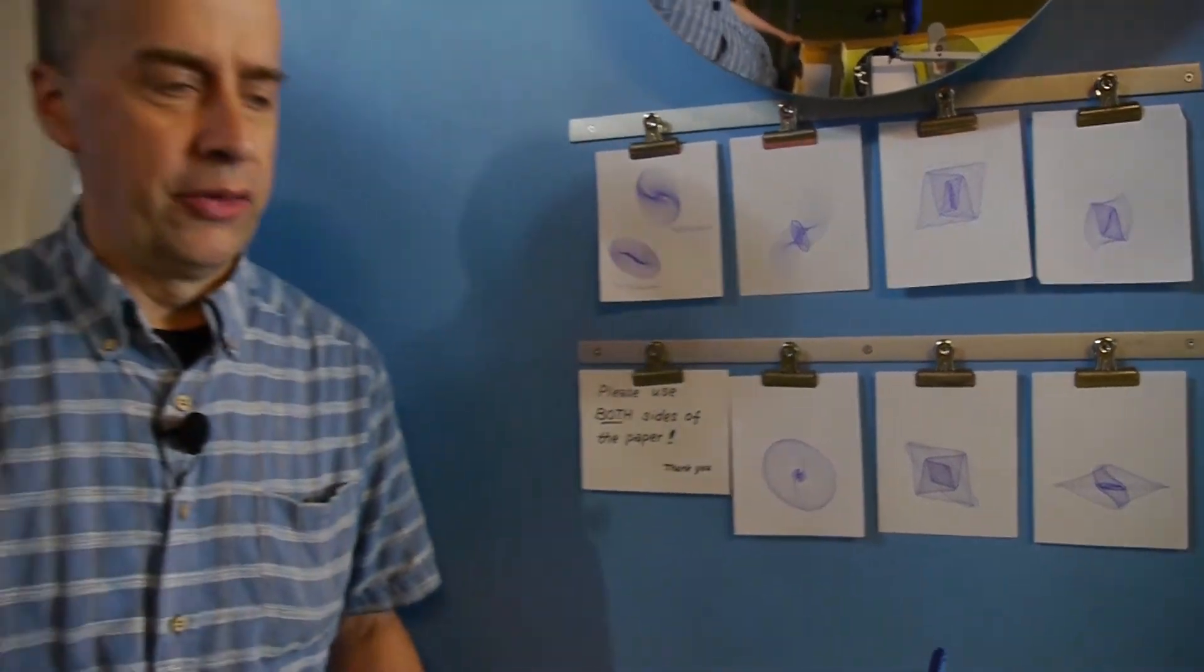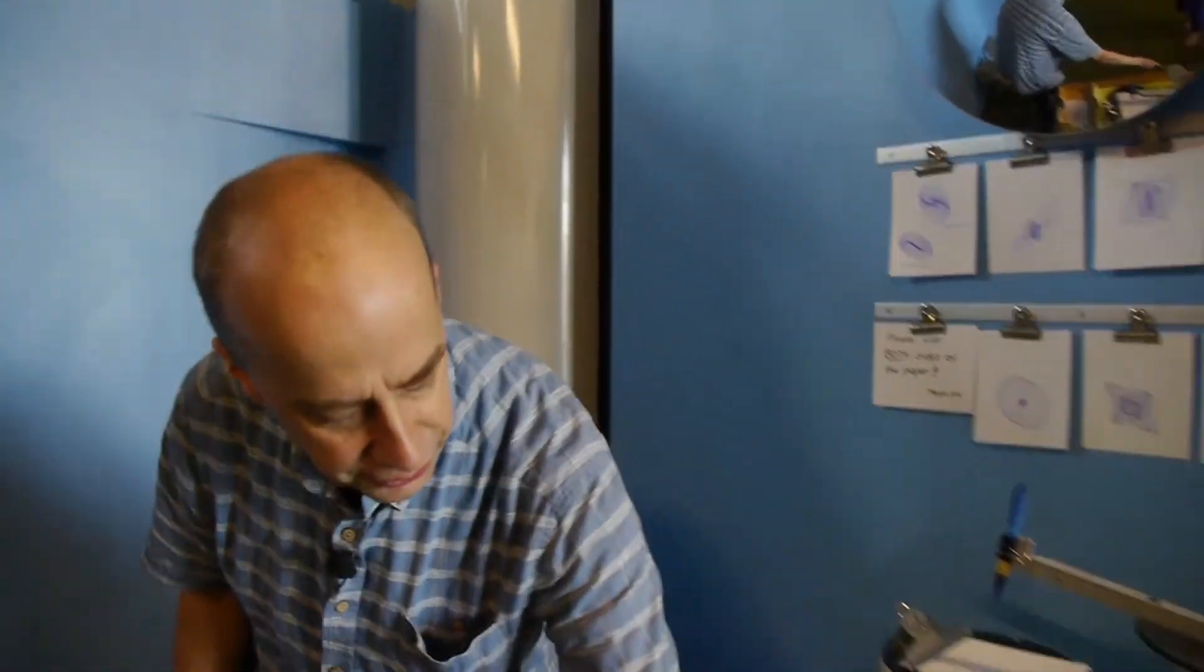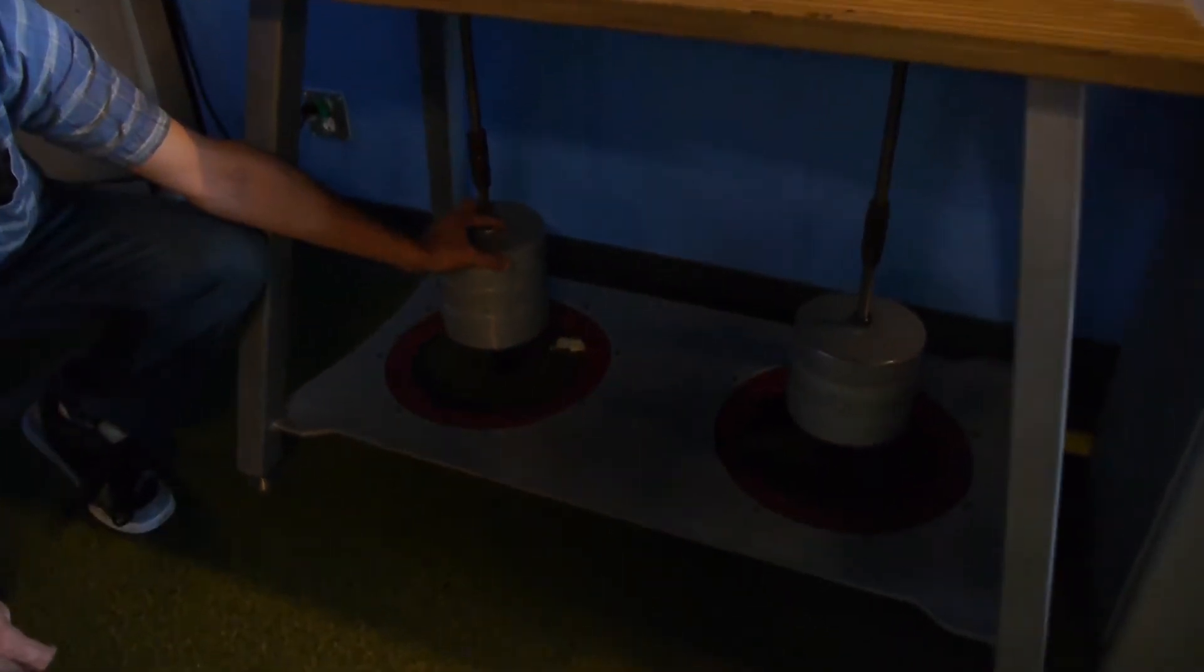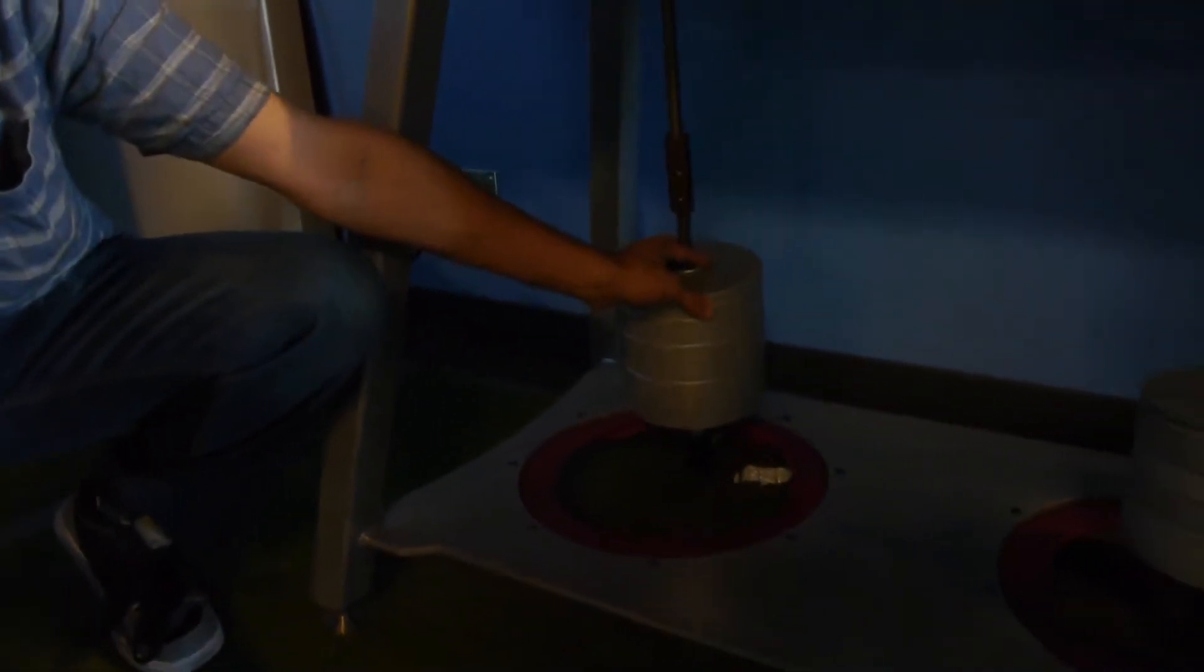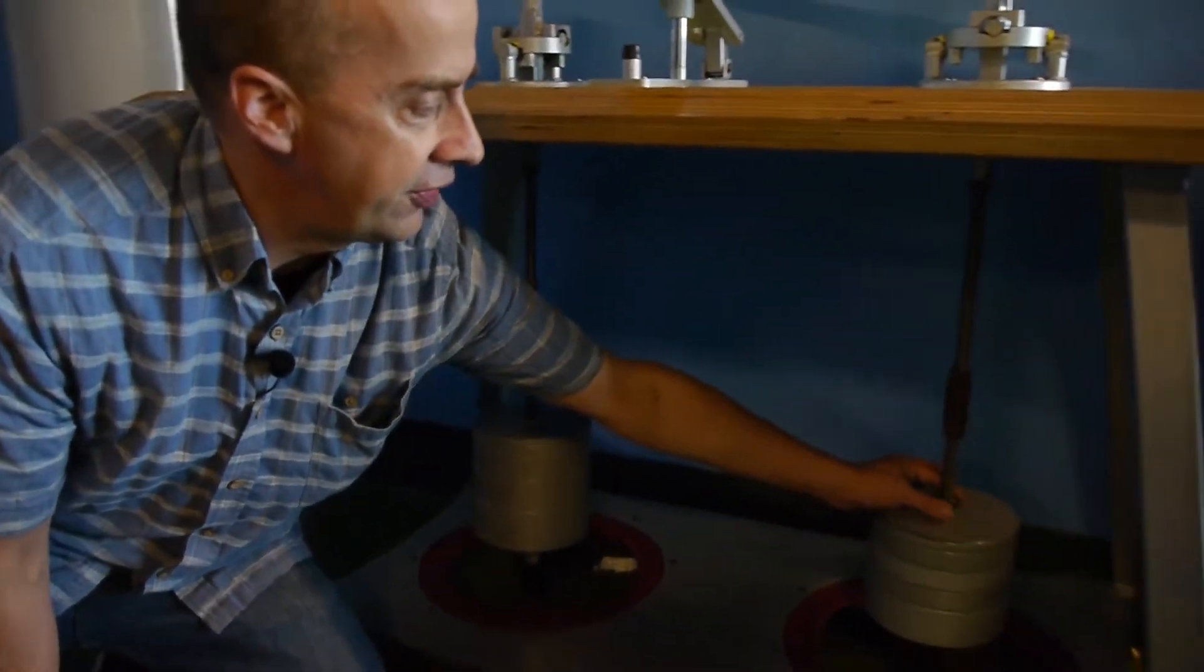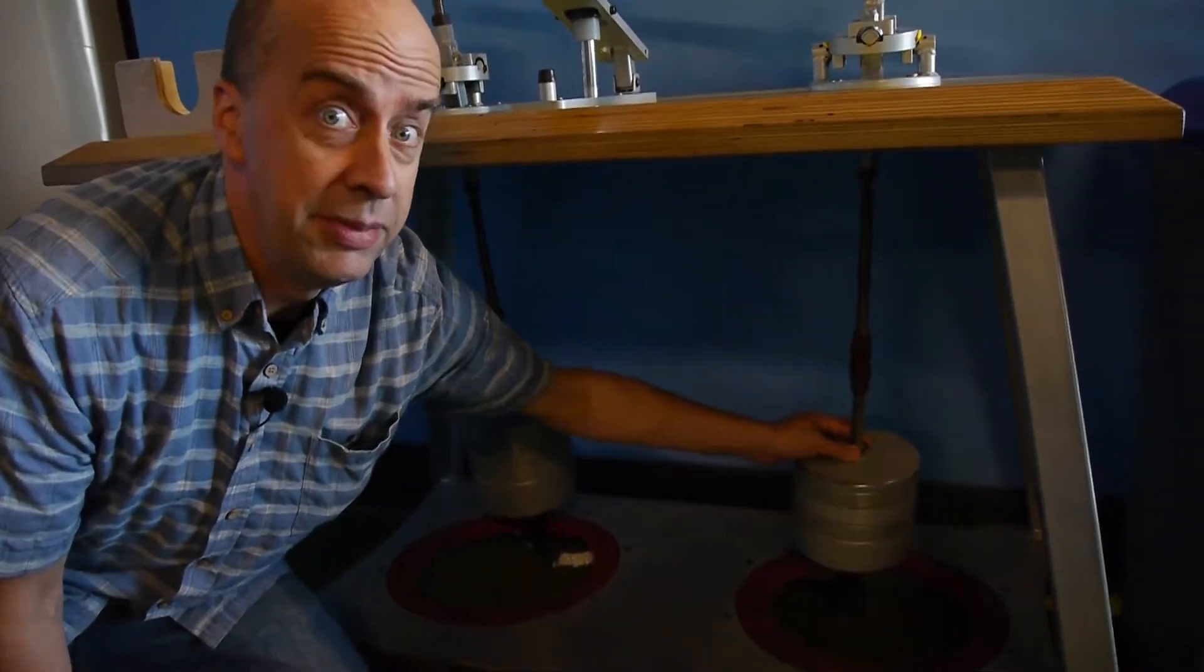To work the harmonograph, the key is to first start these pendulums moving down below. Now you could start one pendulum perhaps going just straight back and forth. If you like, because of the way they're hanging, you can start the other pendulum rotating in a bit of a circle.